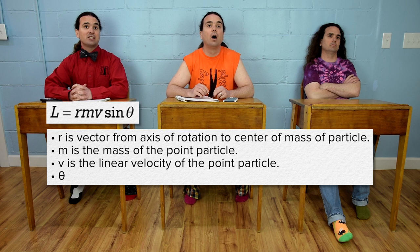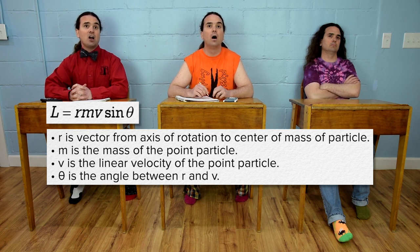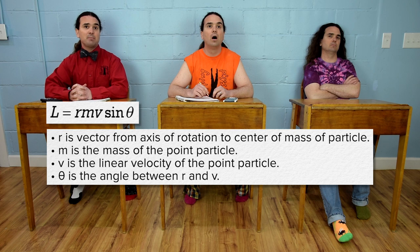v is the linear velocity of the point particle and theta is the angle between the direction of the r vector and the velocity of the point particle. Correct.